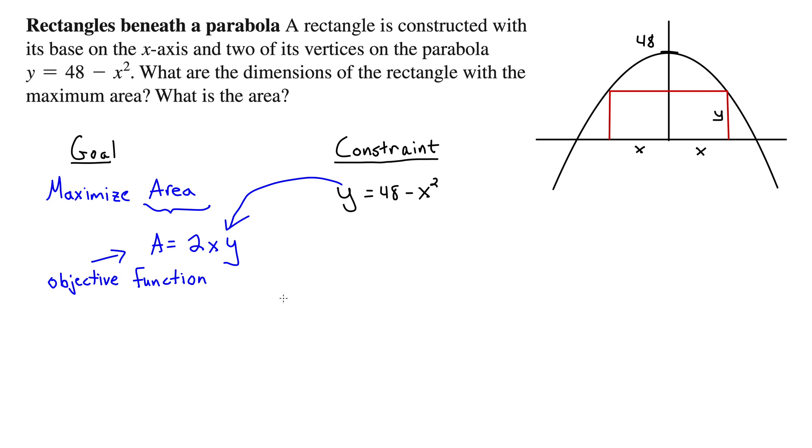This gives us A equals 2x times 48 minus x squared. And now we have something we can take the derivative of and optimize to solve. Well, I don't want to use the product rule so let's distribute that 2x. So we have area is 96x minus 2x cubed. Now we can take the derivative to find our maximum.